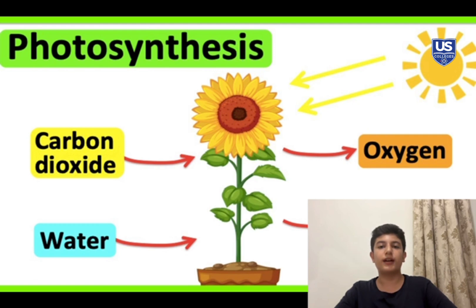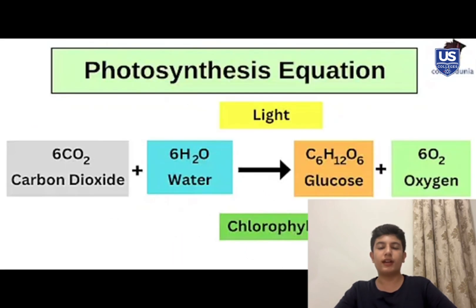The energy is captured by a green pigment called chlorophyll. This is the equation of photosynthesis: carbon dioxide and water which turns to glucose and oxygen.